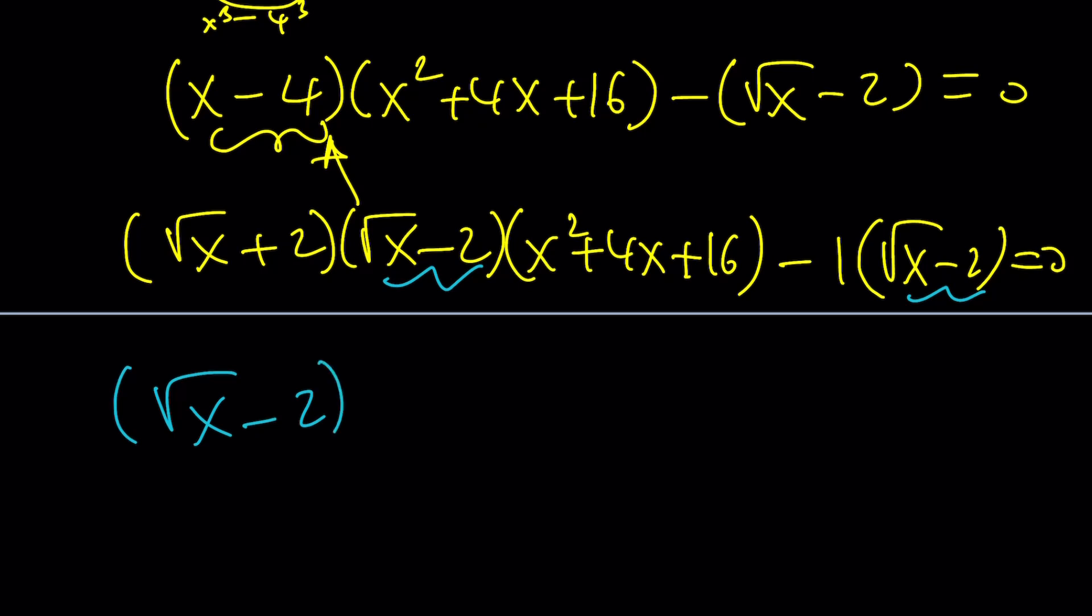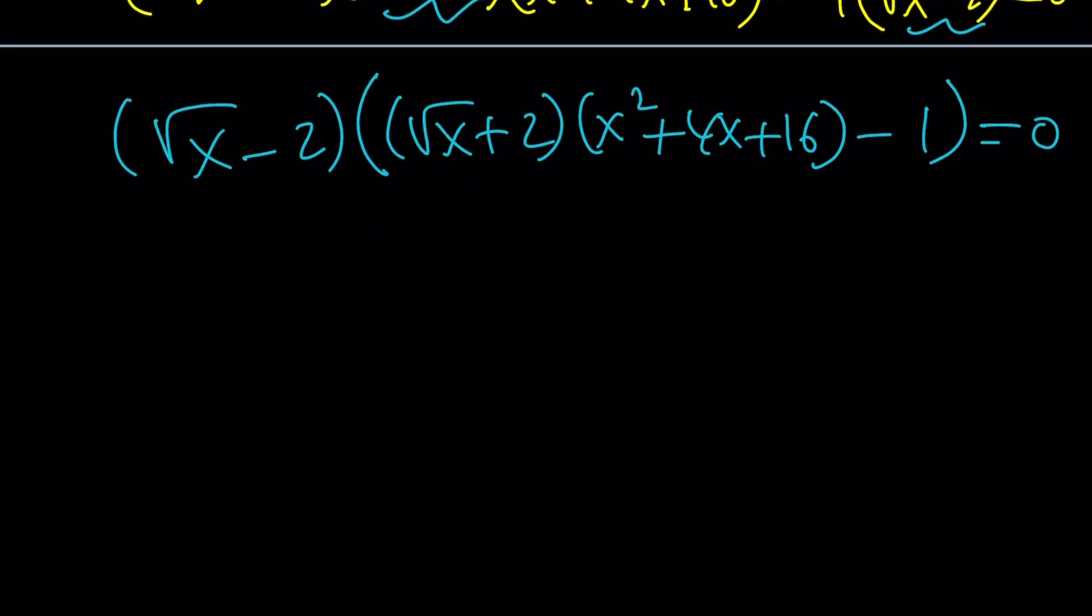And notice that I can factor it out. And then the rest is going to be root x plus 2, multiply by x squared plus 4x plus 16 minus 1 equals 0. Great. Now, from here, we get the following. Root x minus 2 equals 0. Root x equals 2. And x equals 4.